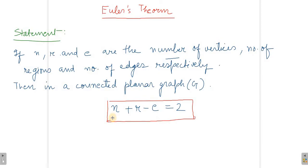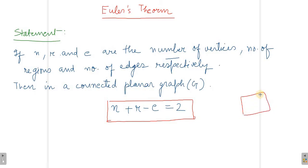N is the number of vertices, R is the number of regions and E is the number of edges. If we take a simple graph, this is the region of the graph.